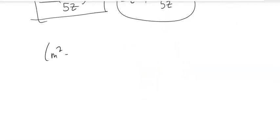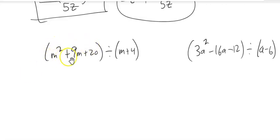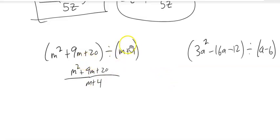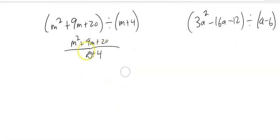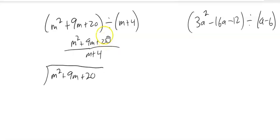Now let's look at something a little different — dividing a polynomial by a binomial. We can write it as a fraction or using the long division setup. That whole (m + 4) is dividing into the whole polynomial. A little piece going into a little piece doesn't quite work here, so we're going to use long division. The thing I'm dividing into goes inside the division bracket, and the thing I'm dividing by goes outside.